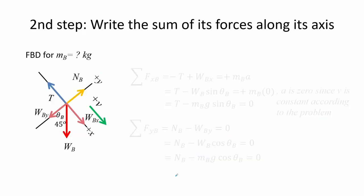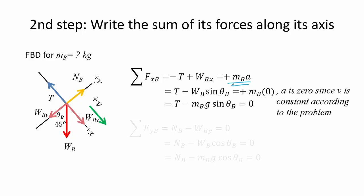For the unknown mass B, the sum of forces along the X axis is equal to the tension minus the mass B times G times sine of the angle theta B equals to 0. For the Y component, it is the sum of the normal force B minus the mass of B times G times cosine of the angle theta B equals to 0.